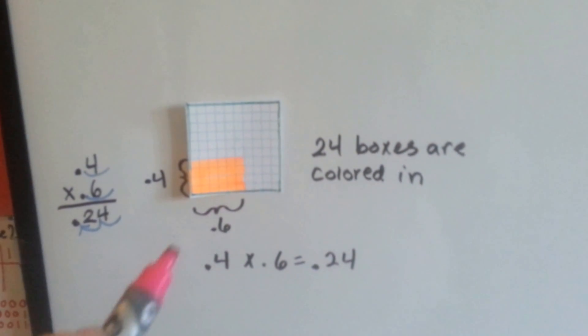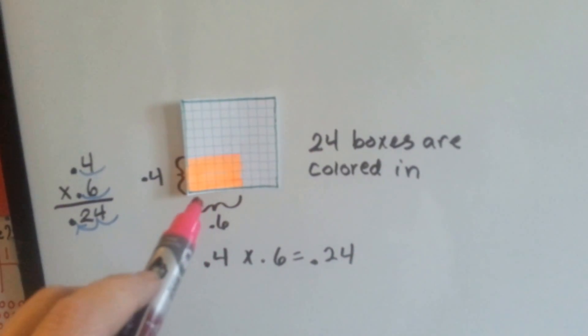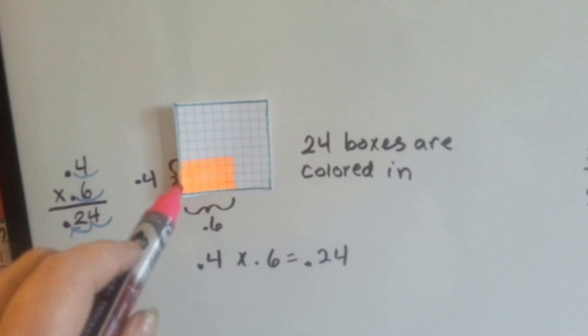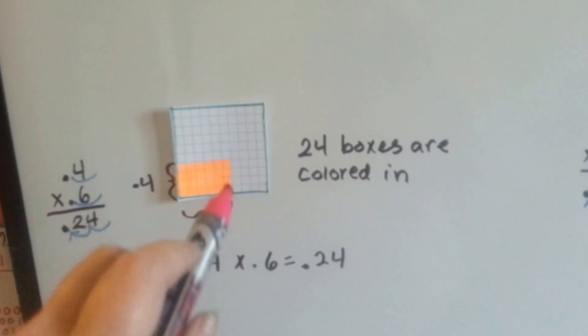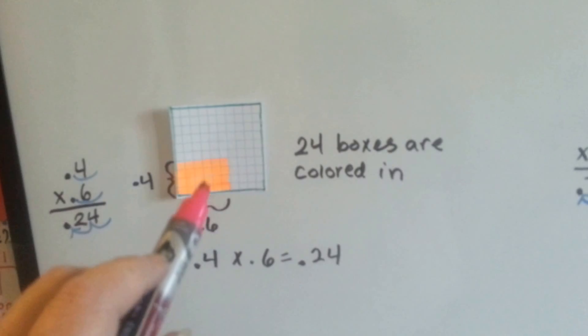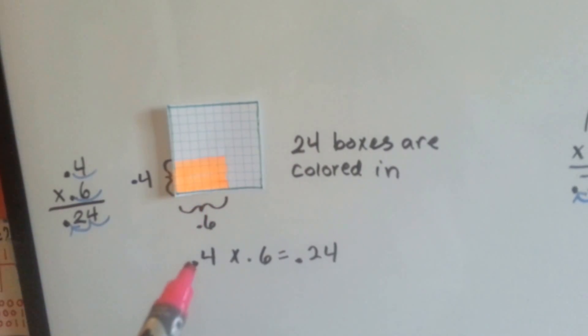For this one, we count 6 boxes across the bottom, and then we count up 4, and then we fill them in, so it's a nice rectangle. 24 boxes are colored in, so we know that 4 tenths times 6 tenths is 24 hundredths.